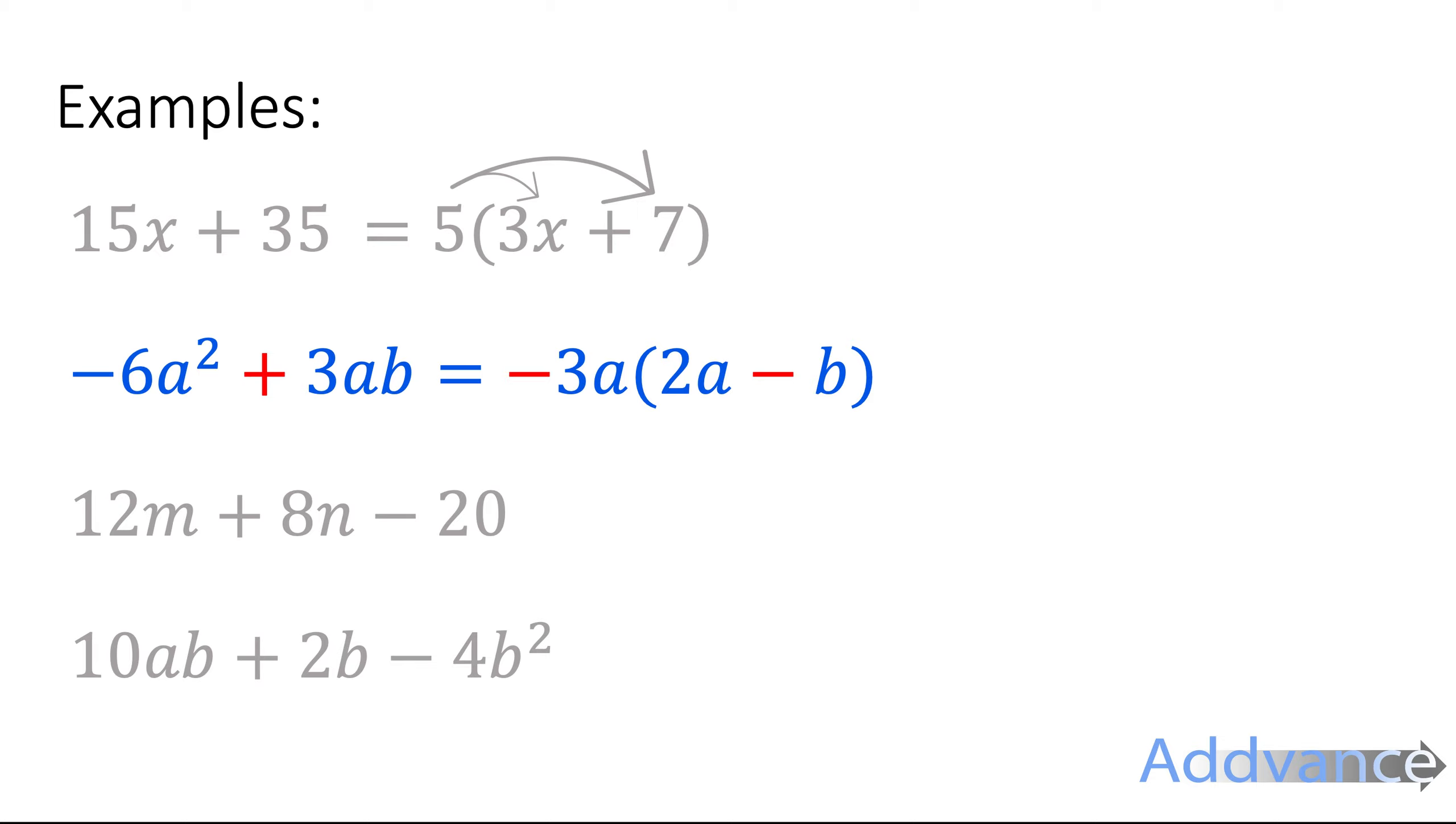Okay, next one: 12m plus 8n minus 20. Okay, for this one we can divide all of those terms by 4, so we put a 4 on the outside. They also can be divided by 2, but 4 is bigger so we need to put 4 instead of 2. And you will get 4 times (3m + 2n - 5). 4 times 3m, 4 times 2n, and 4 times minus 5 will give you 12m plus 8n minus 20.